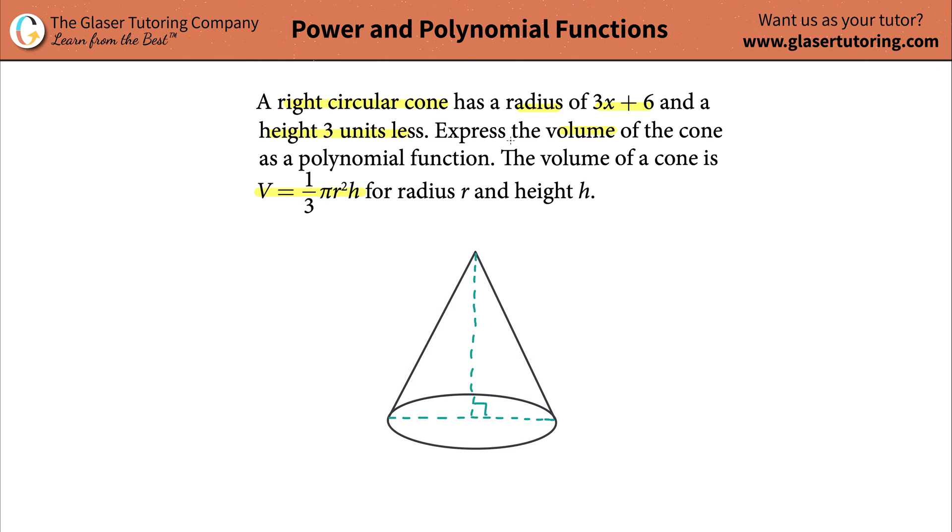So, what do we know in this problem? Well, it tells us that the radius of the base is going to be—it doesn't say base, but that's the only radius in the problem, right? It's a circular base. So, that's going to be 3x plus 6. So, I know that the length from this point all the way over to that point is going to be 3x plus 6.